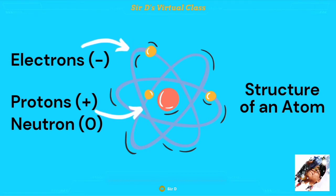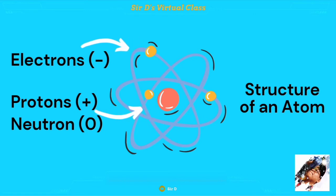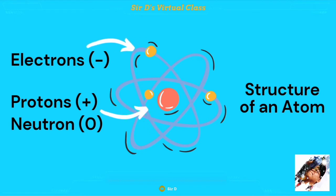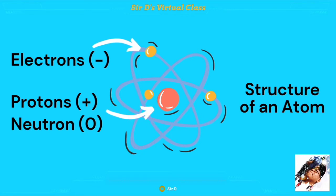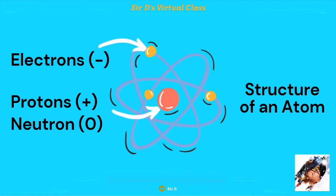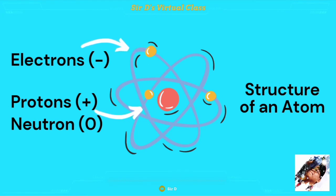Going back to the atom, it has smaller particles. Looking at the structure of an atom, it is made up of three equally important particles: the proton, which is the positively charged particle; the neutron, which is neutral; and lastly, the electrons, which are the negatively charged particles. As mentioned in the video, there is no equal number of electrons from one atom to another, as electrons can flow from one atom to another. This flow or transfer of electrons is called electric current, and thus we have electricity.